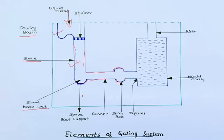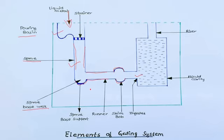The next element is the gates or ingates. The metal poured through the pouring basin passes through the sprue, reaches the sprue well, then passes through the runner, and reaches the ingate. In large castings there will be multiple ingates connected to the runner, and from the runner the molten metal is distributed through the ingates into the mold cavity. These ingates are the entrance of the molten metal to the mold cavity.